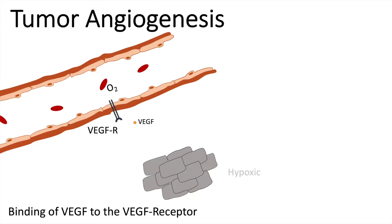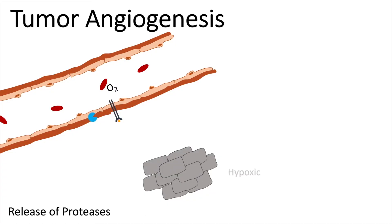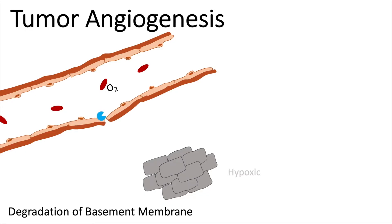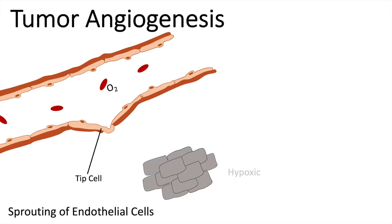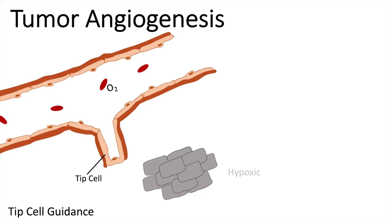To simplify, let's take one VEGF molecule. In response to VEGF binding on the VEGF receptors, proteases are released and these can degrade the basement membrane, making it leaky. Now the sprouting procedure can start. The endothelial cells — especially the tip cells — will lead the way toward the hypoxic environment.